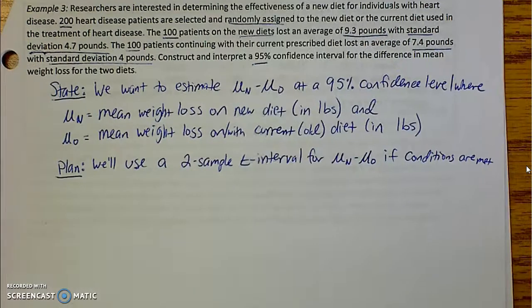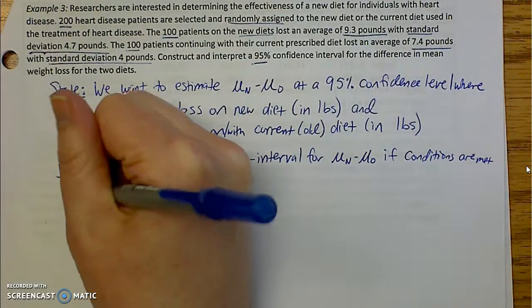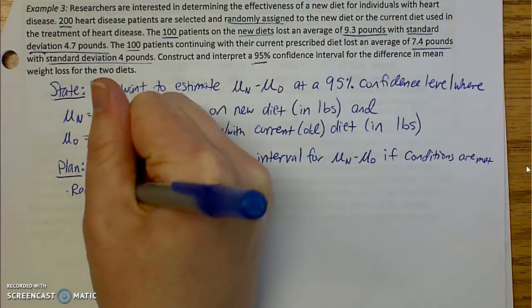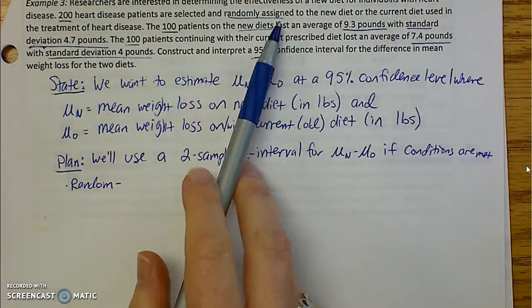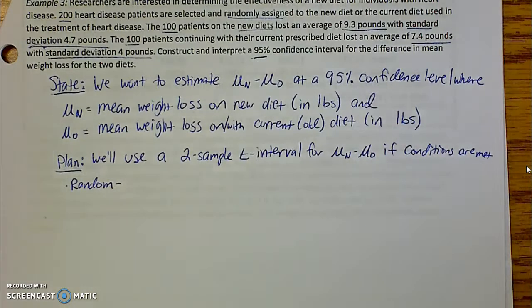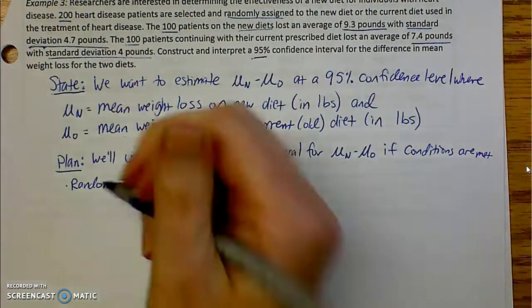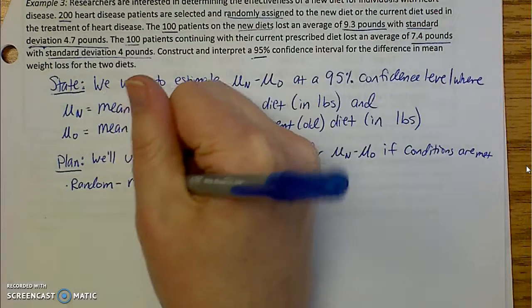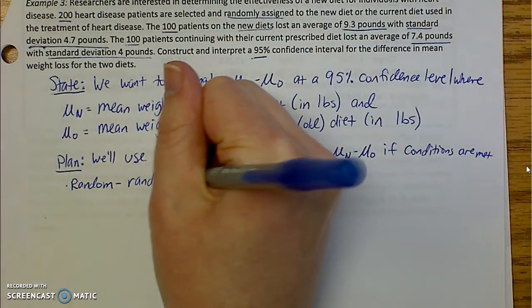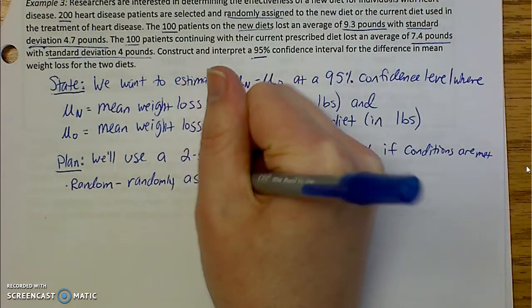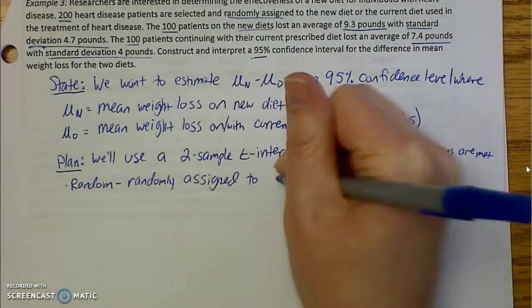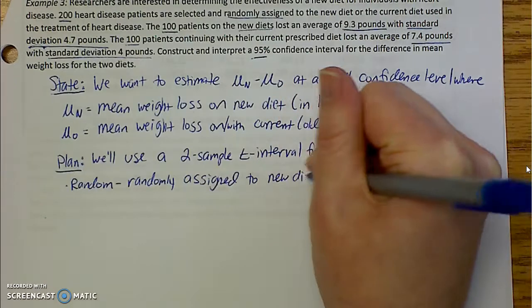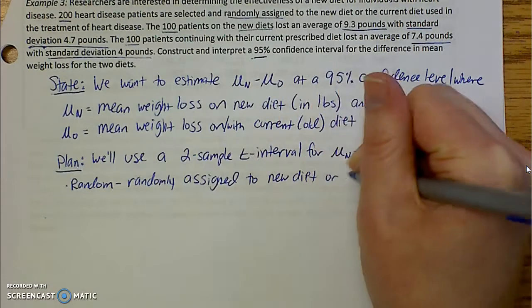Condition number one: check if it is random. So we said, we saw up here, that it was randomly assigned. So because it is randomly assigned, we know it has been random. Randomly assigned to new diet or their current diet.